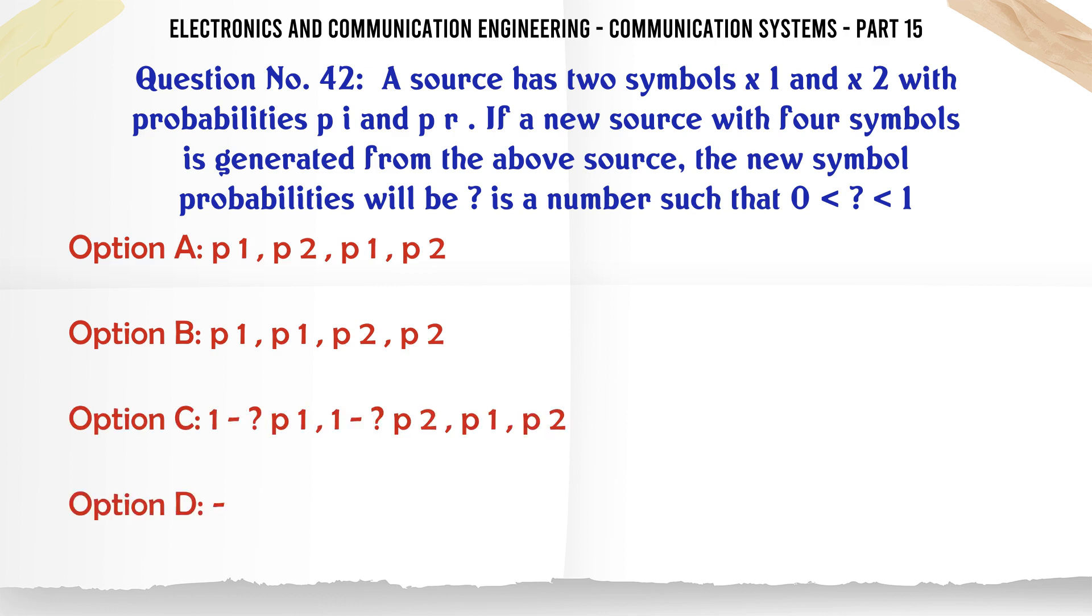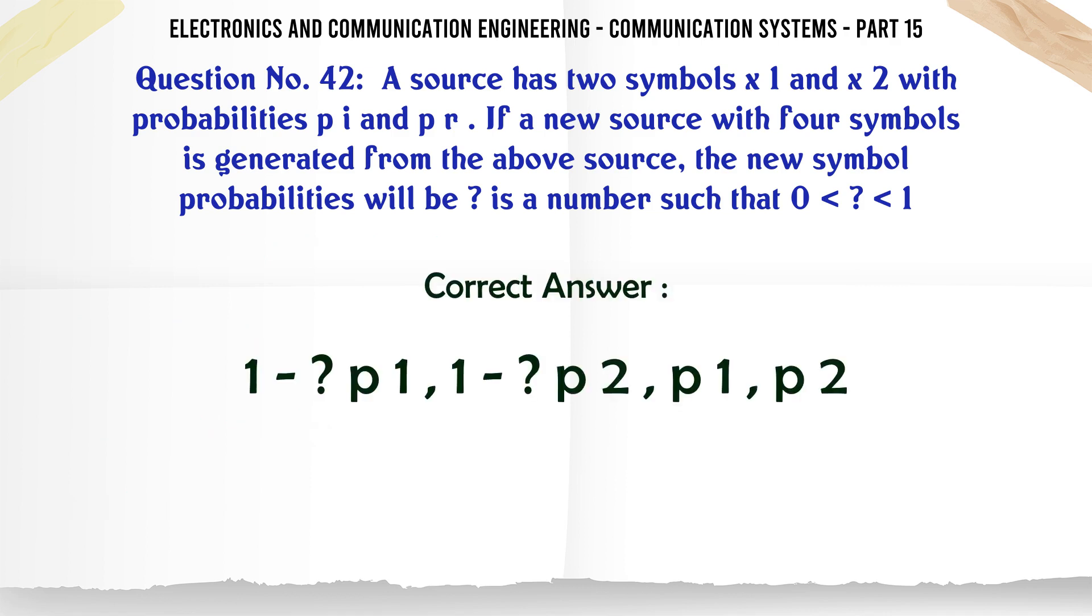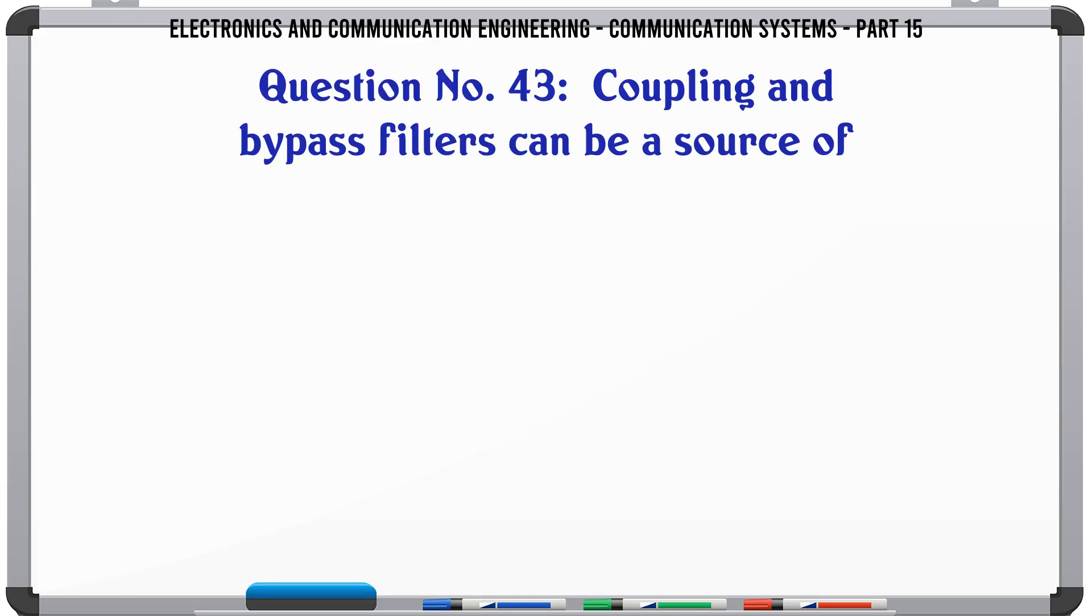A source has two symbols x1 and x2 with probabilities p i and p r. If a new source with four symbols is generated from the above source, the new symbol probabilities will be where is a number such that 0 < ? < 1: A p1 p2 p1 p2, B p1 p1 p2 p2, C 1-p1 1-p2 p1 p2, D the correct answer is 1-p1 1-p2 p1 p1 p2.